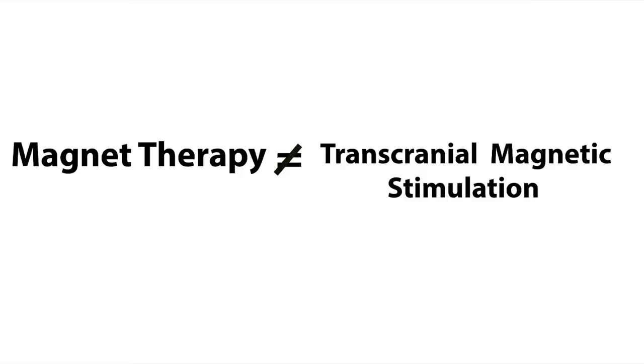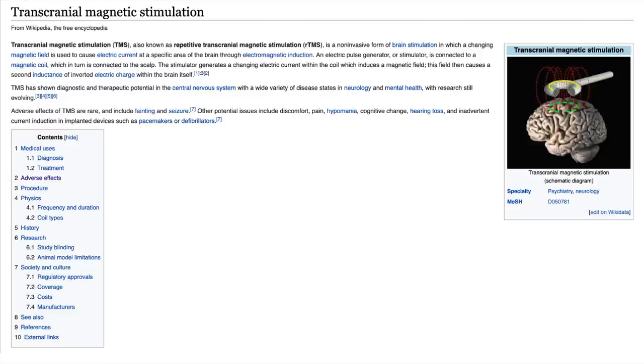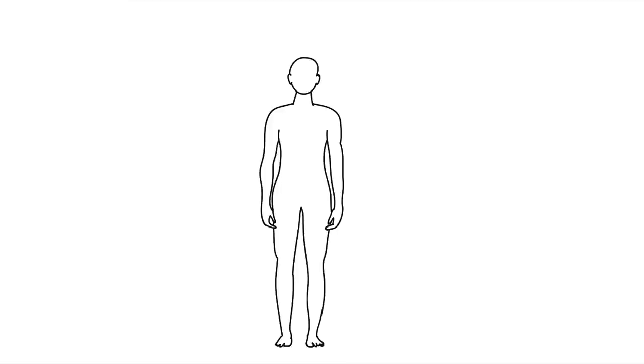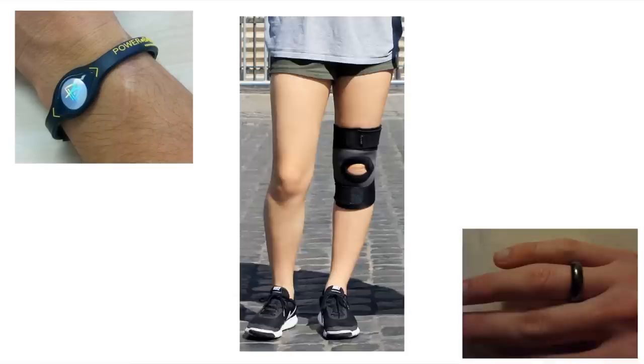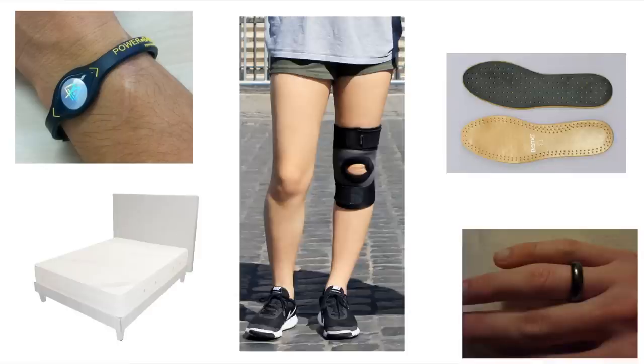Just a quick side note, magnet therapy is not to be confused with transcranial magnetic stimulation, which is a real medical treatment that's used by neurologists to treat depression and other neurological ailments. The application of magnet therapy today hasn't really changed since ancient times. You adhere a static magnet to a location on your body, either as a bracelet, a ring, knee brace, shoe insert, or under your mattress.